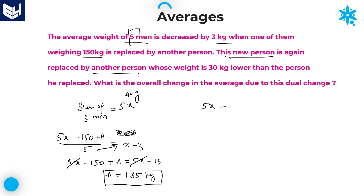We are replacing this new person, so minus 135. Previously, after the first replacement, the sum of all the members was 5x minus 15. Because initially we replaced the 150 kg person with A, and we got the value of A as 135. Therefore the required sum is 5x minus 15.